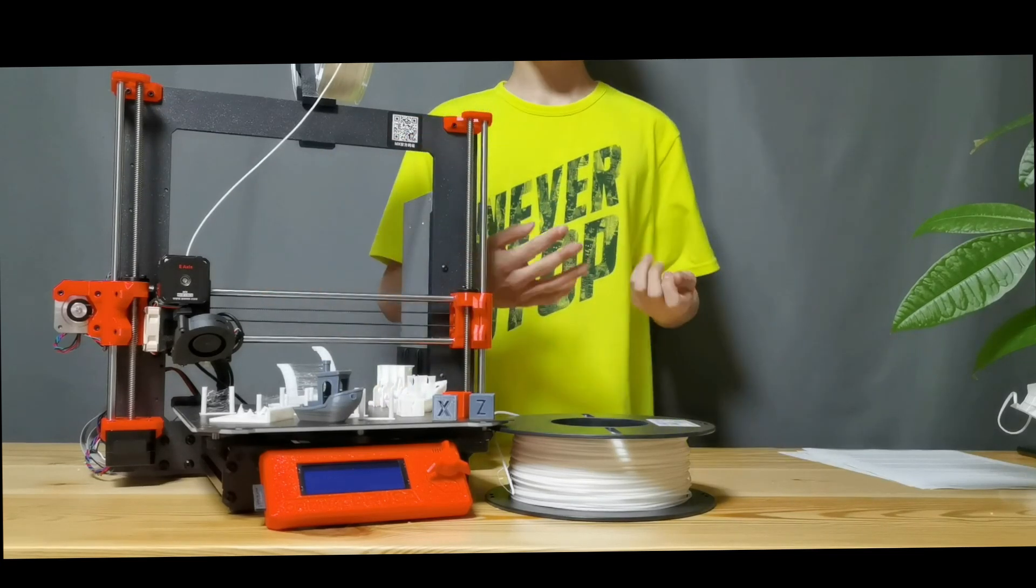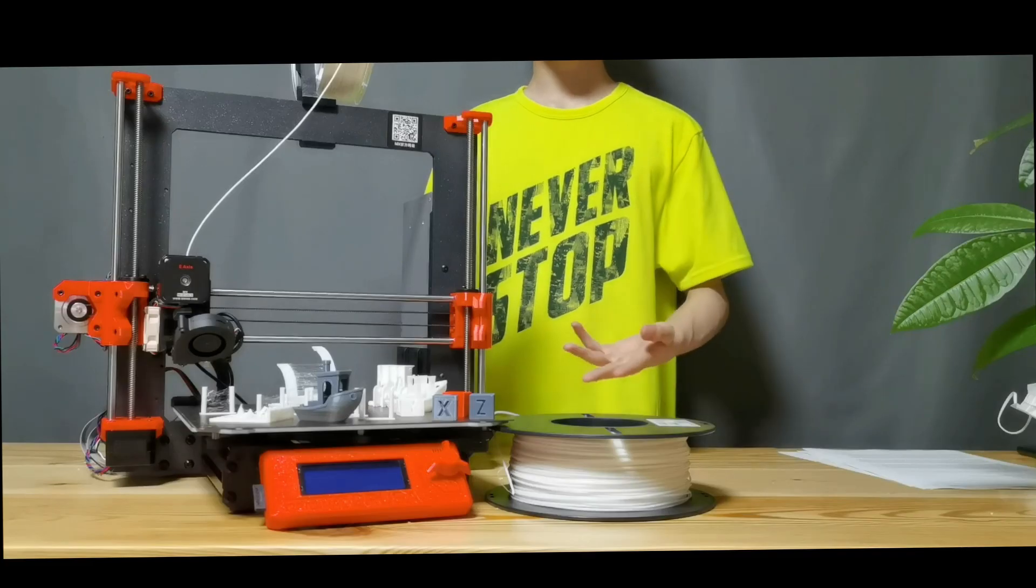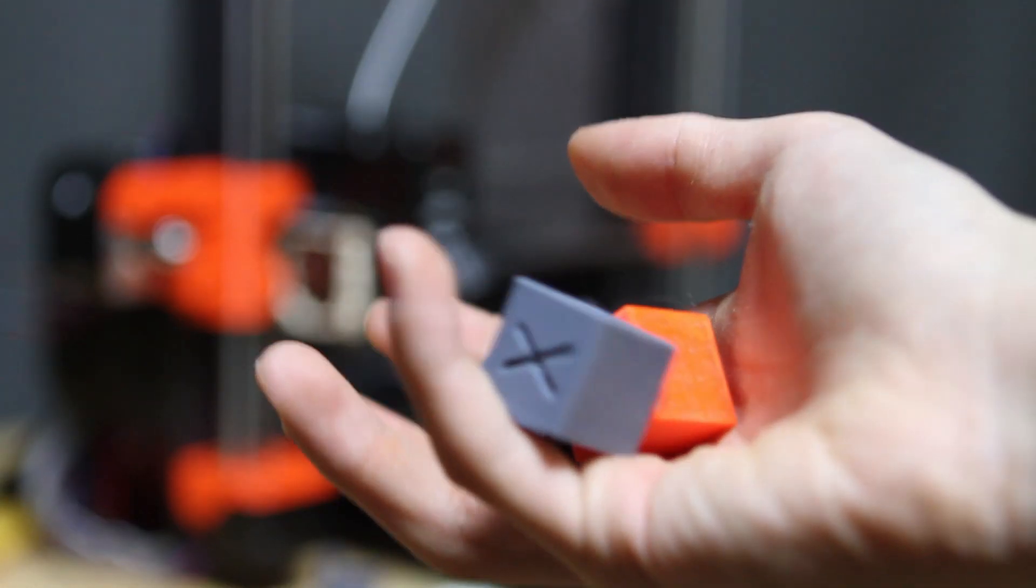I did a lot of tuning with these stringing tests, which take 15 minutes to print each. You should actually print one to check if your printer strings or not. And these are PETG calibration cubes.